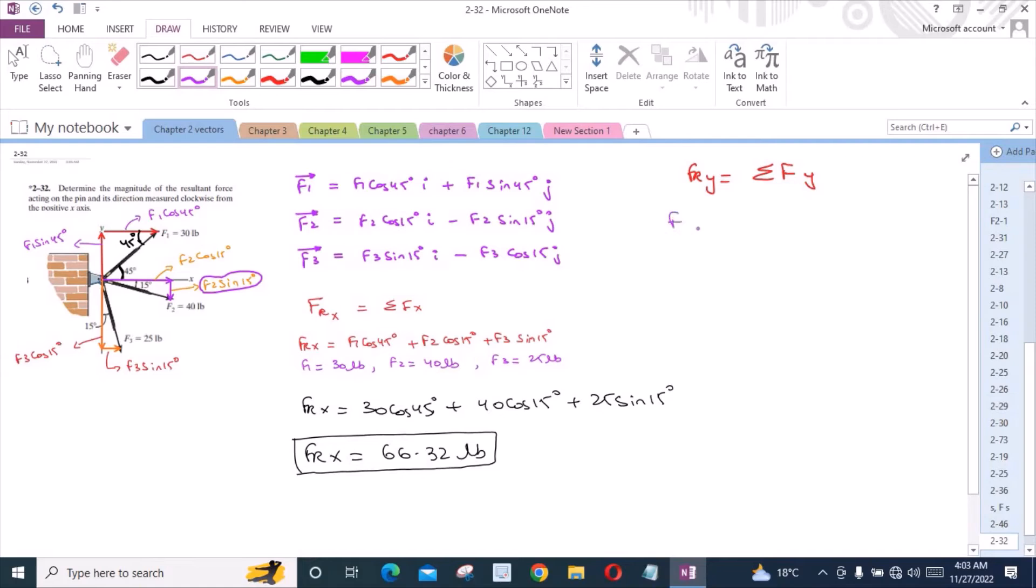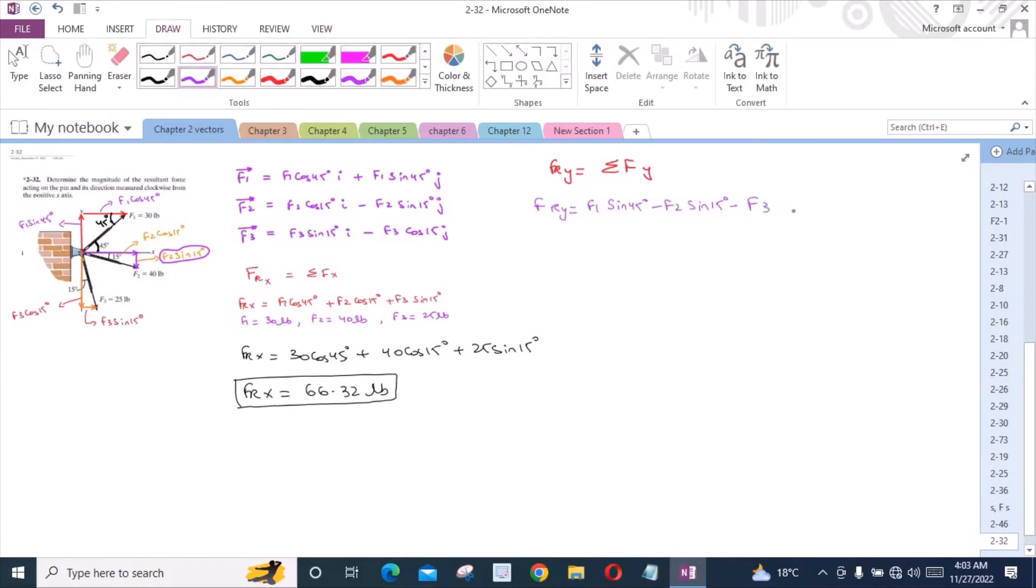So we have Fy is equal to F1 sin 45 degrees minus F2 sin 15 degrees minus F3 cos 15 degrees. Again we have the same values for F1, F2, and F3, so Fy becomes 30 sin 45 minus 40 sin 15 minus 25 sin 15 degrees. So Fy becomes negative 13.29 lbs.